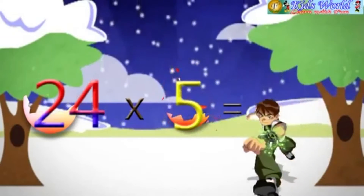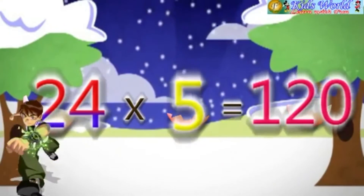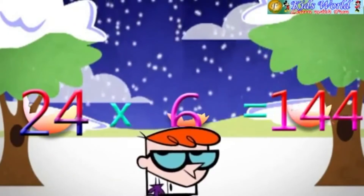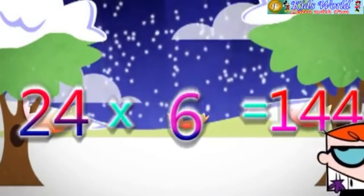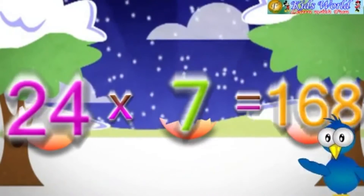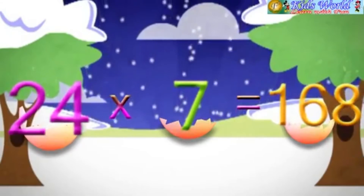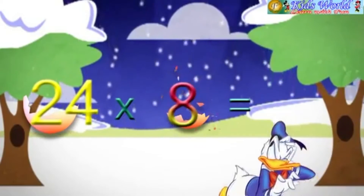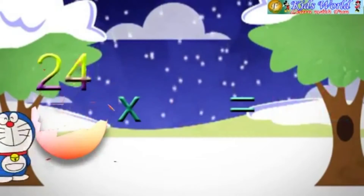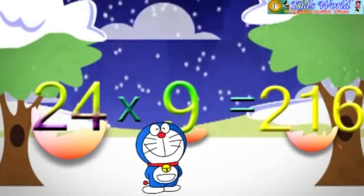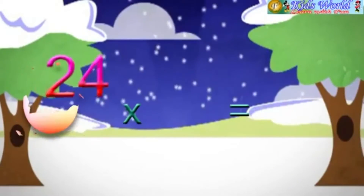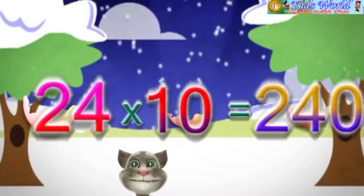24 into 5 is equal to 120. 24 into 6 is equal to 144. 24 into 7 is equal to 168. 24 into 8 is equal to 192. 24 into 9 is equal to 216. 24 into 10 is equal to 240.